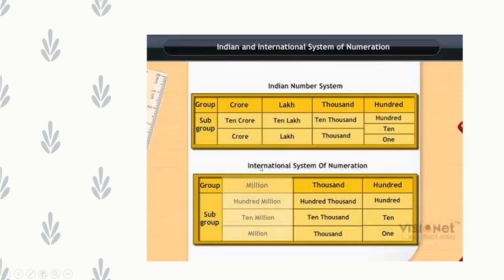In the international system of numeration, we have the units period, thousands period, and millions period — each period having 3 place values. Units period: 1's, 10's, 100's. Thousands period: thousands, ten thousands, hundred thousands. Millions period: millions, ten millions, hundred millions. Every period has 3 place values, unlike the Indian system where only the units period has 3.